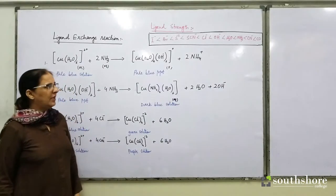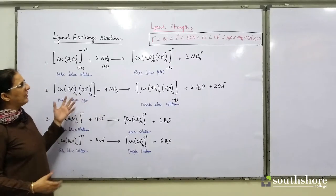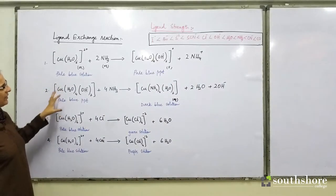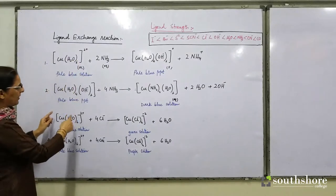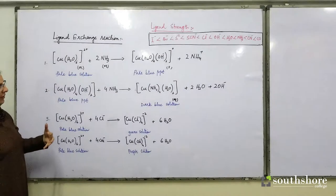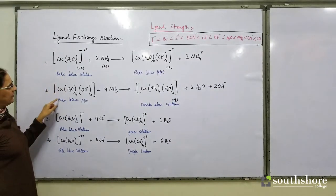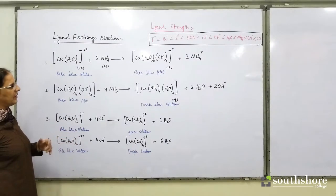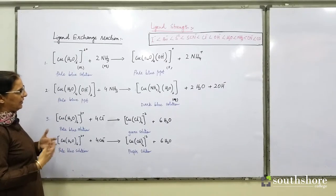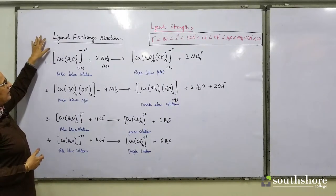Good morning students. Now that we have studied colored complexes of your transition metal ions, today I am going to talk about some colors of your solutions. Look at your complexes which I have written — whenever we write something in square brackets, that means we are talking about the complex ion. So my task today for you is to pay attention and see what are the different colors. The heading for the topic is ligand exchange reaction.